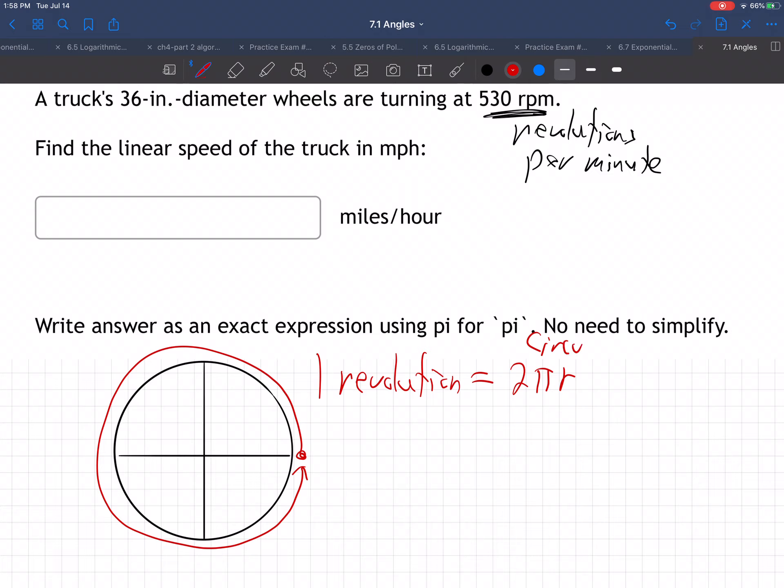2 pi r. That's the circumference of a circle, how far around the outer edge. So one revolution is 2 pi r, where r is the radius.